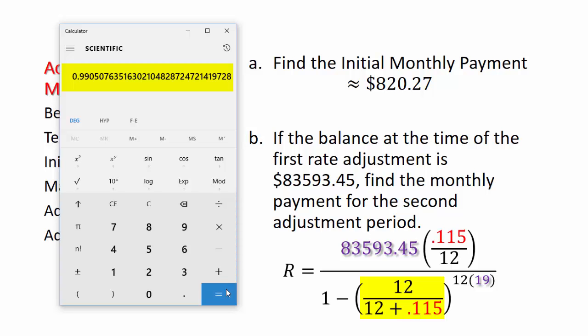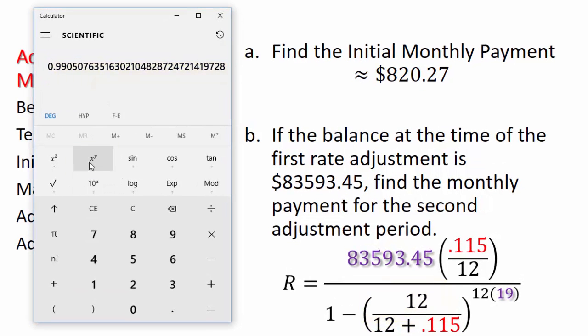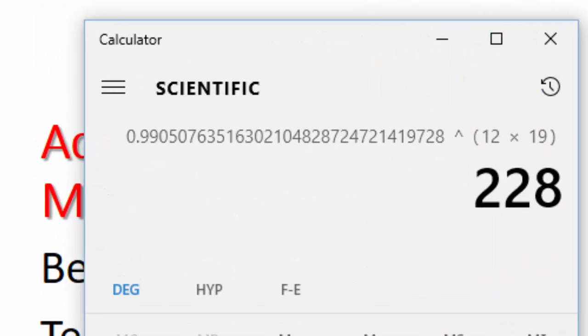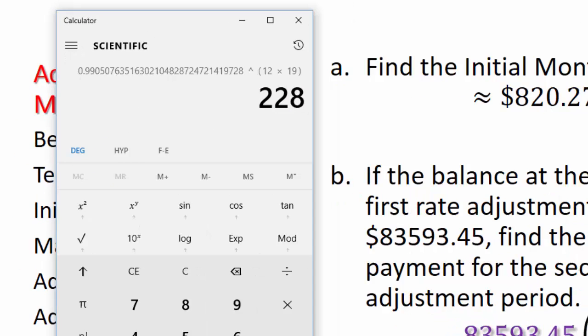And now I'm going to raise that to the power of 12 times 19. Now I can't do that one in my head, so I'm going to hit X to the Y. And in parentheses, I'm going to type 12 times 19 and close the parentheses. That way I'm raising this number, 0.99-ish, to 228 and hitting equals.